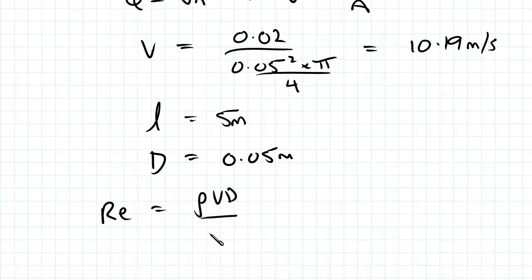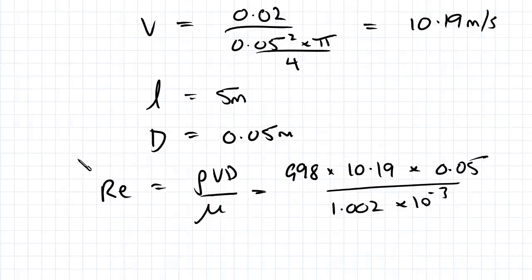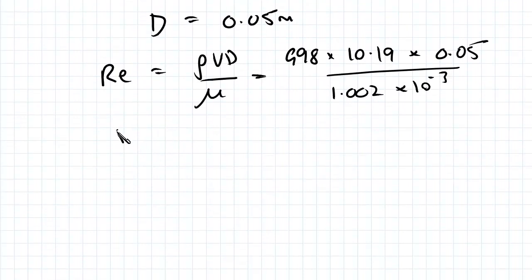That's 998 times 10.19 times 0.05 divided by 1.002 times 10 to the minus 3. So our Reynolds number is equal to 507,262.7, which is approximately 5.07 times 10 to the 5.